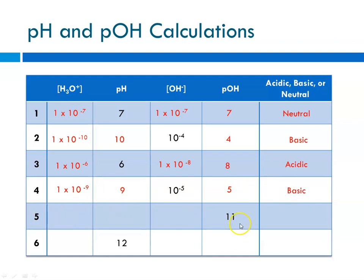Number 5: pOH is 11. That means the hydroxide ion concentration is 10 to the minus pOH, which is 10 to the minus 11. That means the pH is 14 minus 11, which is 4. So the hydronium ion concentration is 10 to the minus 4. The pH is 4, which is less than 7 — acidic.